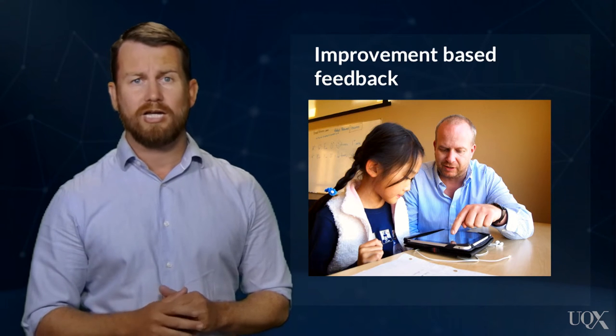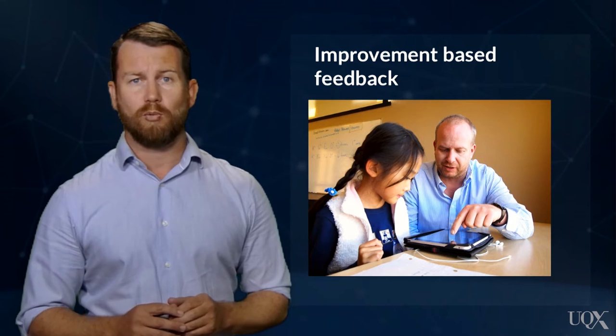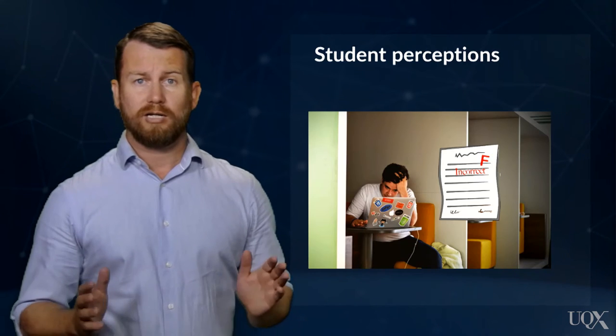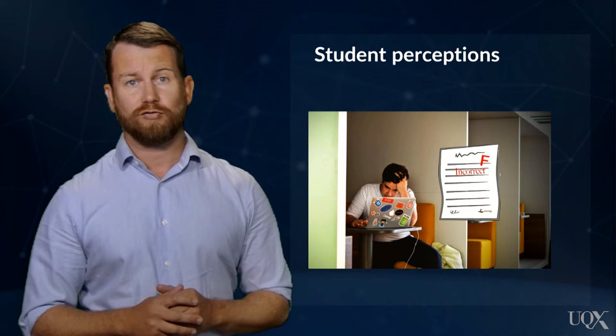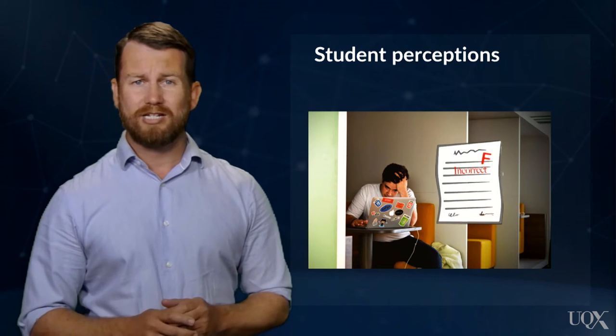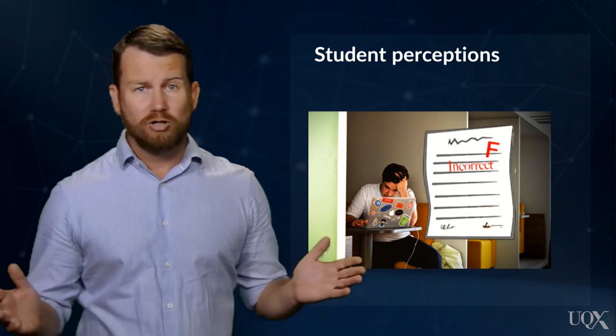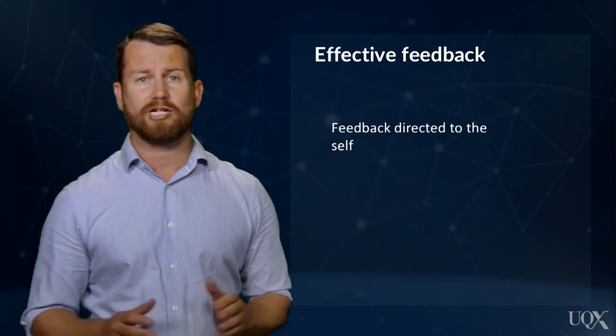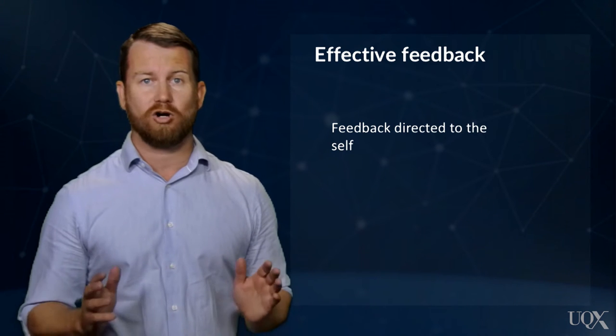Feedback can be directive and tell students where they went wrong, or facilitative and provide guidance on how to improve. Feedback that includes elaborations about how to improve is more likely to lead to improvements in learning efficiency and student achievement. Improvement-based feedback that includes guidance is more effective than statements about whether work is right or wrong, as it takes into consideration how feedback is received by learners. Effective feedback tells students how they are going in relation to goals and criteria and then provides guidance and opportunities for improvement.